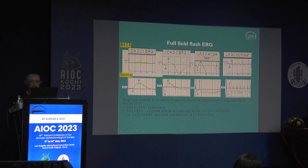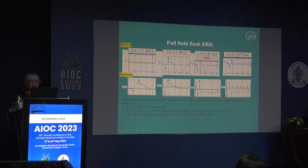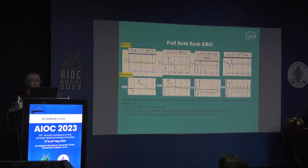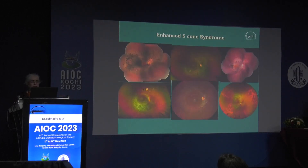In enhanced S cone syndrome, the rods are not functioning, so there is no rod response. Flash ERG to dim and bright light look identical because the whole retina is replaced by S cones. The S cone amplitude is higher than the standard flicker amplitude. Although it appears similar to retinitis pigmentosa, ERG differentiates the two. Patients present with night blindness because the rod system and large parts of the retinal circuitry are non-functional.